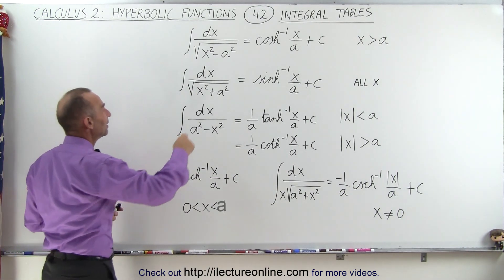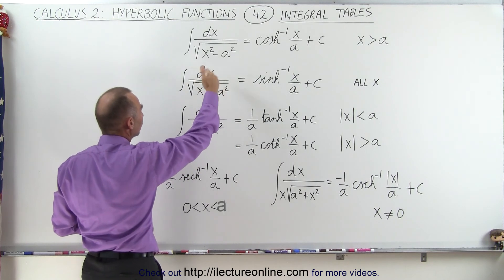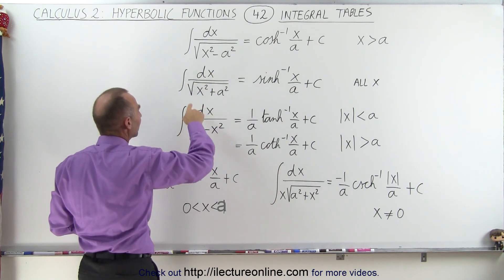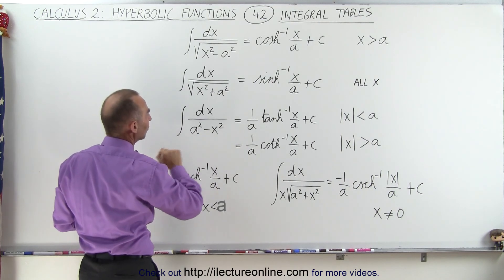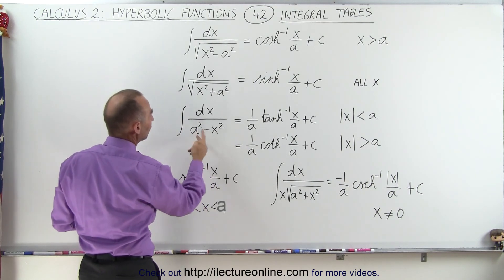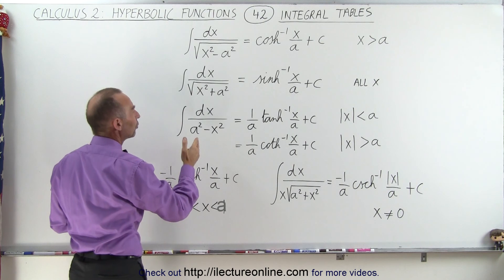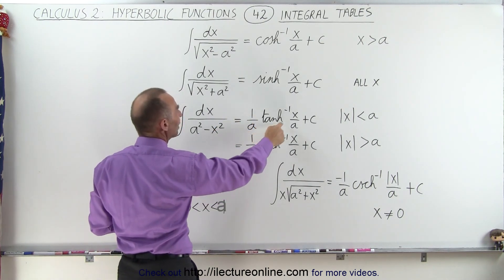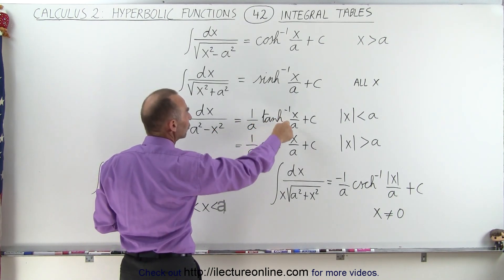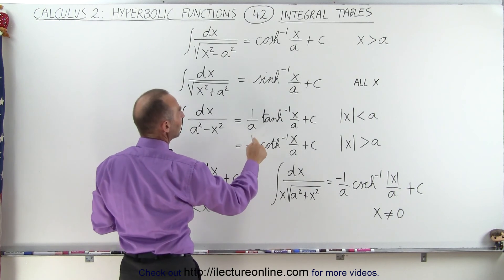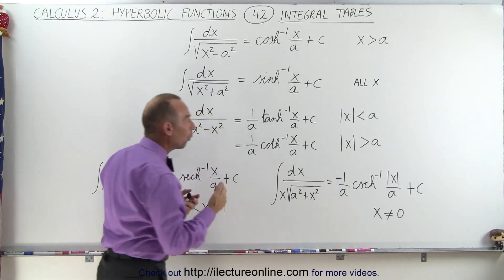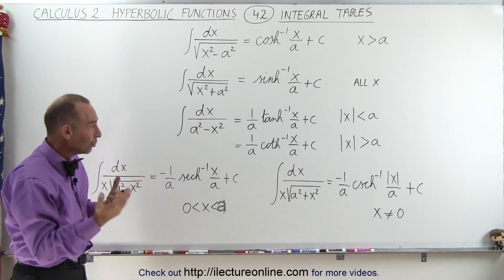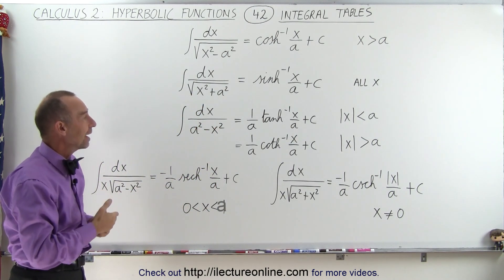If instead, rather than having dx over the square root of x squared minus a squared, now we have the integral of dx over a squared minus x squared, without the square root sign, and also these two in reverse, that is equal to either 1 over a times the inverse hyperbolic tangent of x over a, or 1 over a times the inverse hyperbolic cotangent of x over a, one or the other, and the one you pick depends upon the value of x.